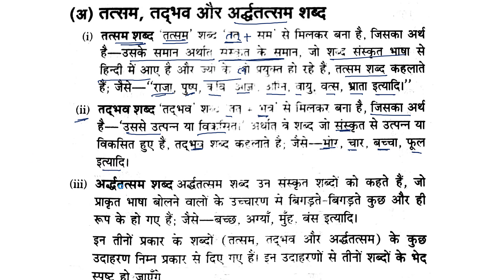The next is the transition from Tatsam to Tadbhav. So a Sanskrit word in its original form is Tatsam, and when it undergoes phonetic transformation — passing through Prakrit — it becomes Tadbhav. For example, Agni is the Tatsam word, and its Tadbhav form is Aag. Similarly, Aksha becomes Aankh in Hindi. These examples show how Sanskrit words transform into Hindi Tadbhav words.